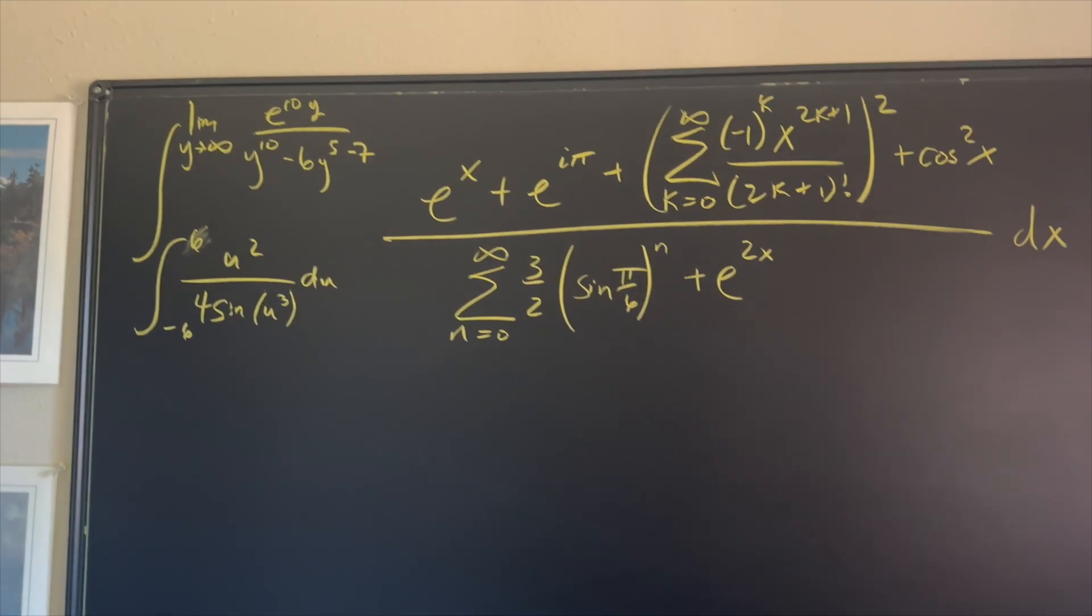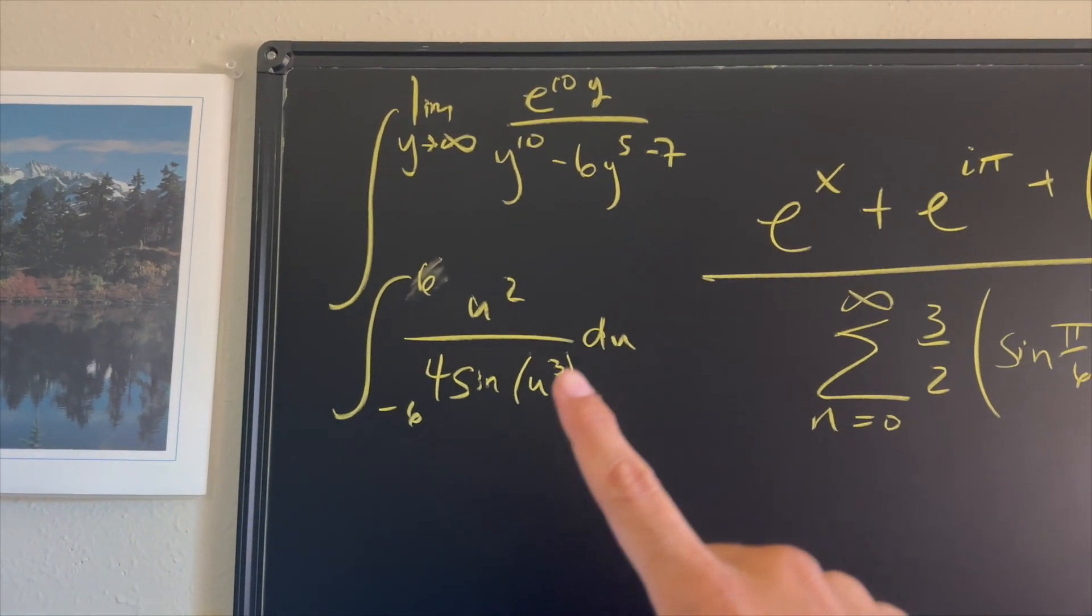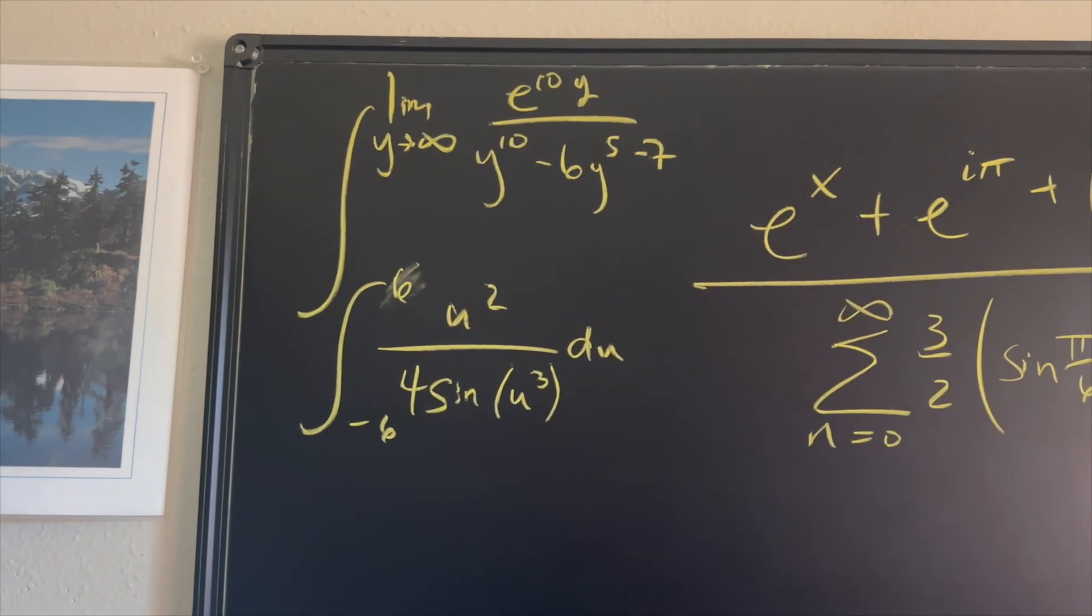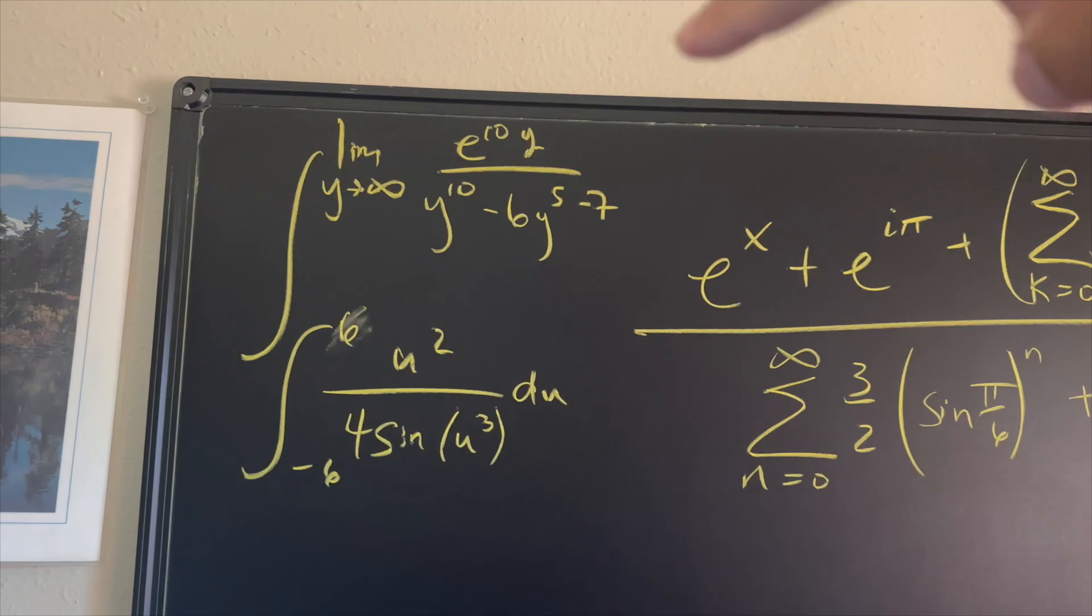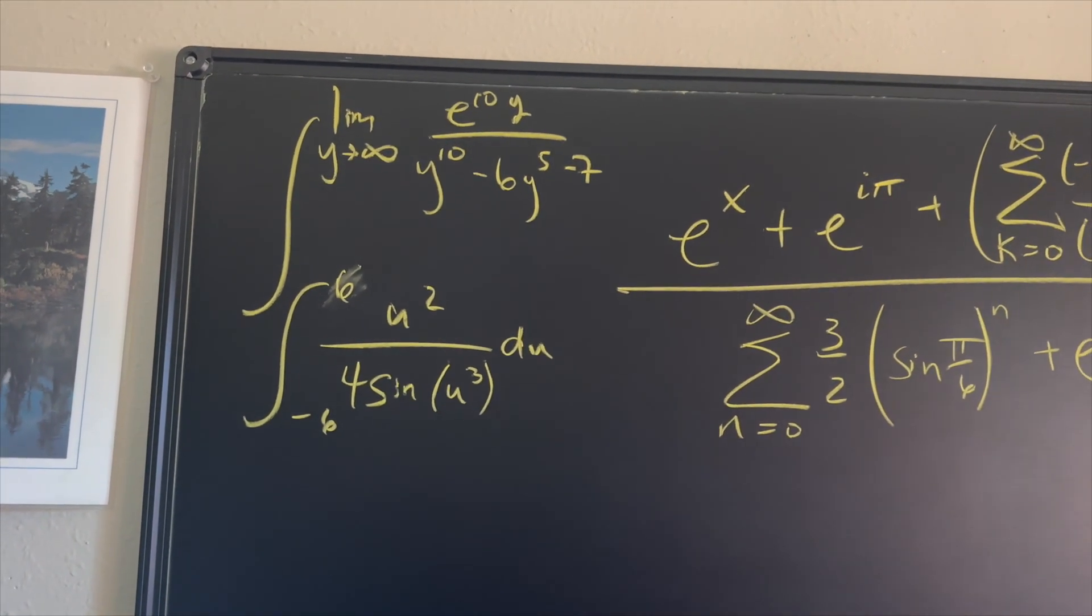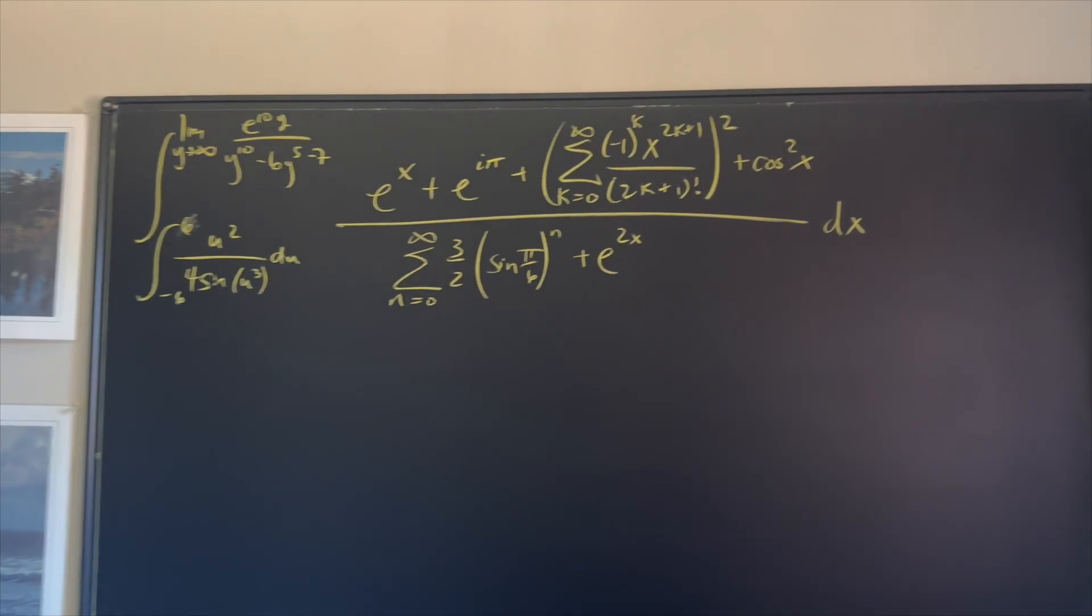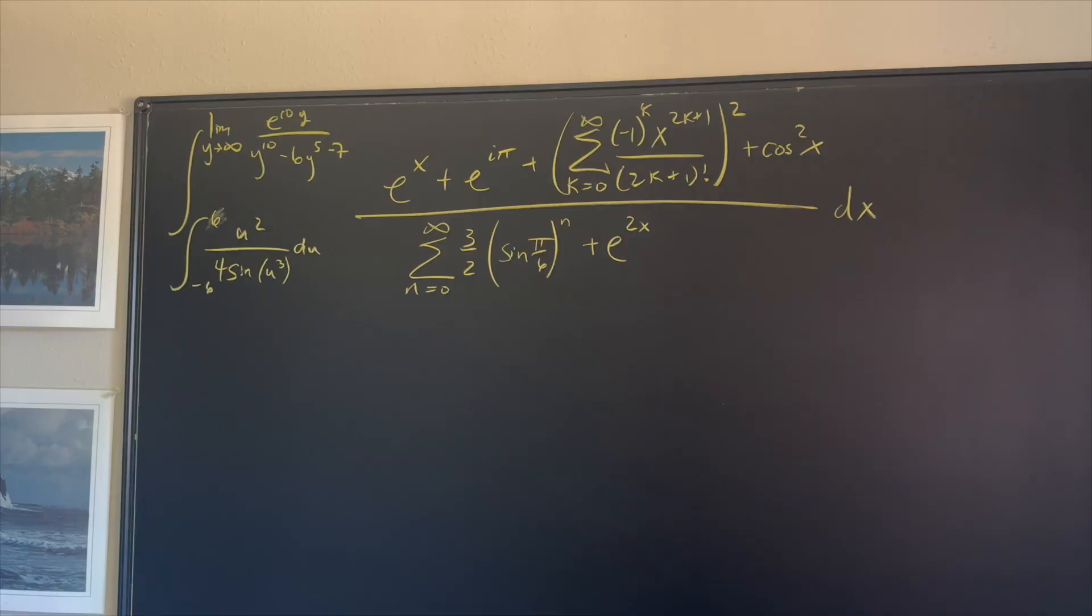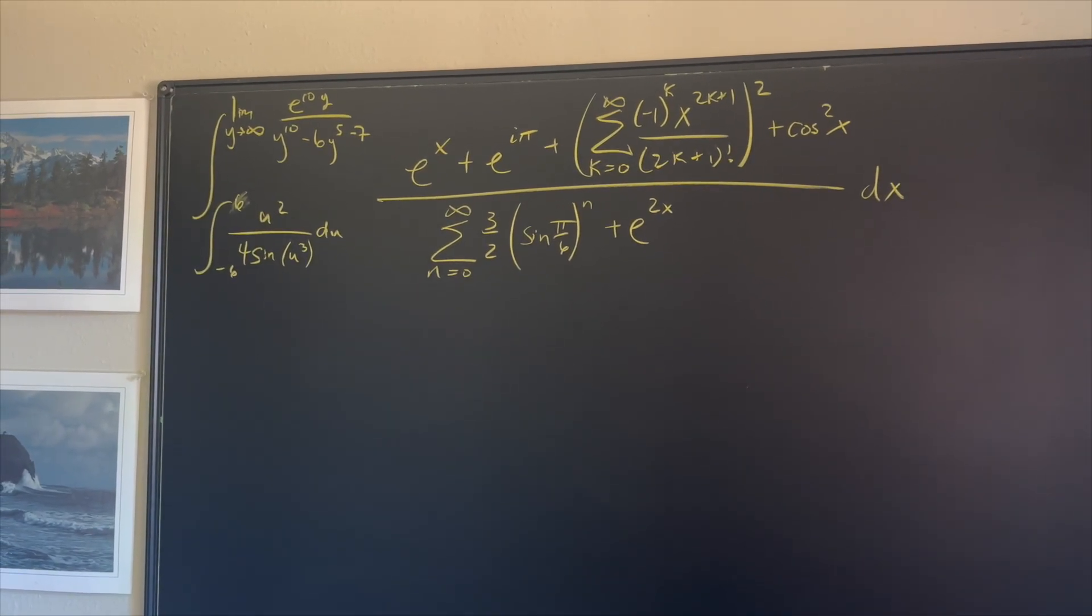So here's what we're dealing with. We have a huge integral here where the lower bounds are from negative 6 to 6 of u squared over 4 sine of u cubed times, and then the upper limit is this limit as y approaches infinity of e to the 10y over y to the 10th minus 6y cubed minus 7. And then you have this entire integral that looks a little nasty, but it's actually not that difficult to solve. I'm going to go ahead and pause the video and see how you can solve it first, and then we're going to get to it.